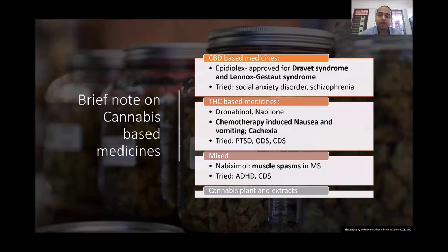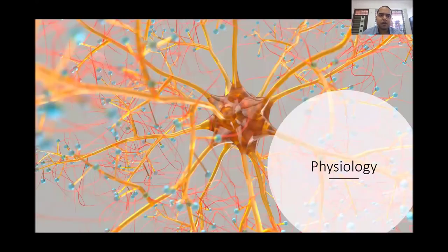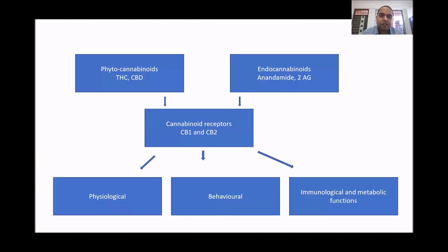Coming to physiology — we have discussed phytocannabinoids THC and CBD as exogenous cannabinoids. The endogenous cannabinoids include anandamide and 2-AG, which act on cannabinoid receptors predominantly CB1 and CB2, causing various physiological, neurological, and metabolic functions. I will start with what happens when exogenous cannabinoids like THC enter the body, then move on to endocannabinoids.